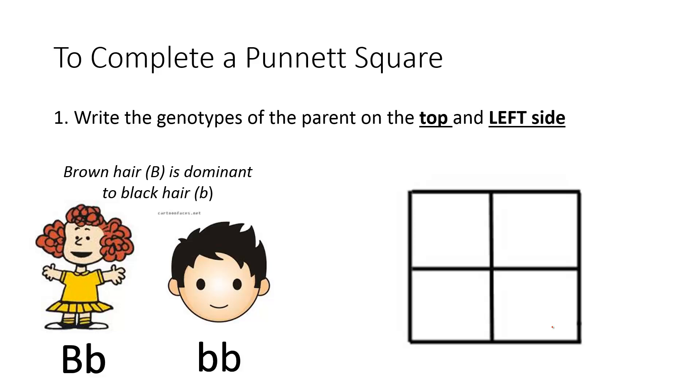To complete a Punnett Square, there are five steps. Step one is to write the genotypes of the parent on the top and left-hand side of the box. And I mean this box here. There's one on your paper too.